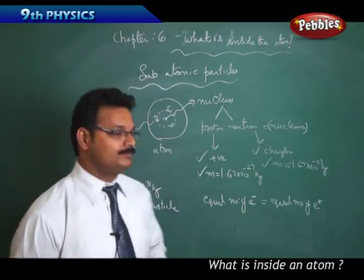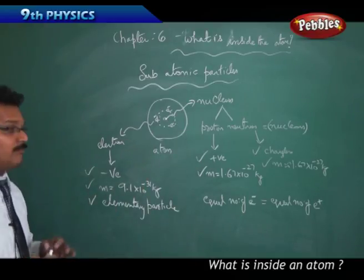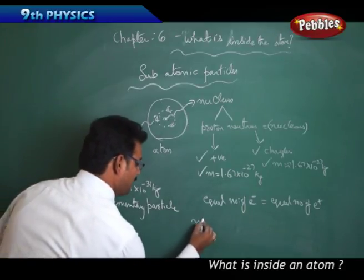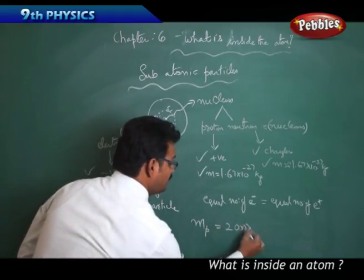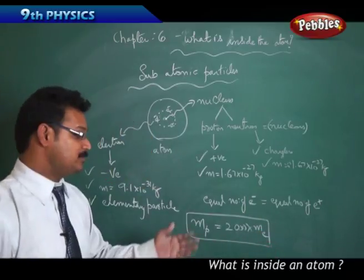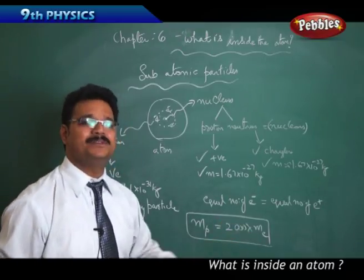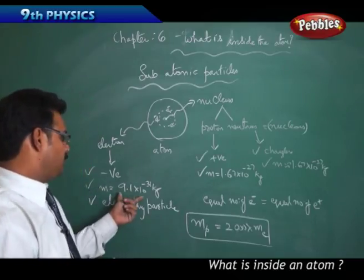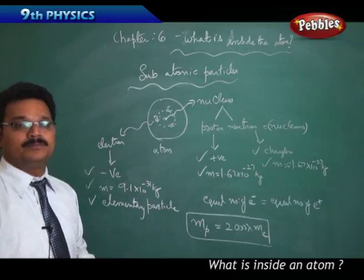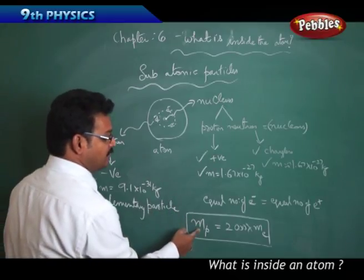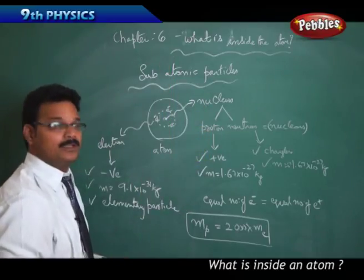Now comparing the masses of electron and proton — experiments show that the mass of the proton is equal to 2000 times the mass of the electron. The proton mass is so much bigger that the electron mass is negligible in comparison. Even though the electron mass seems like a large number, it is very very small compared to the proton mass.